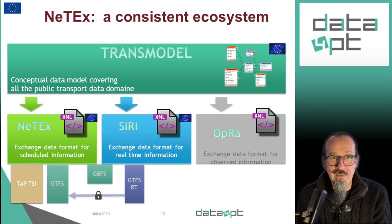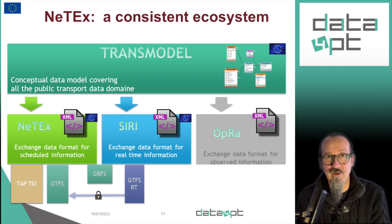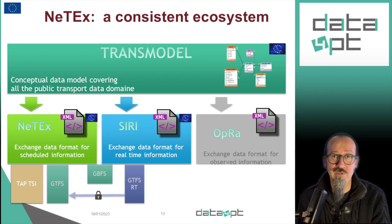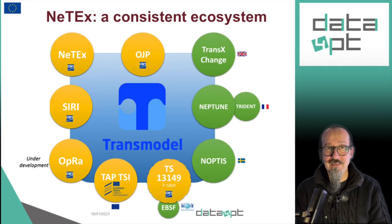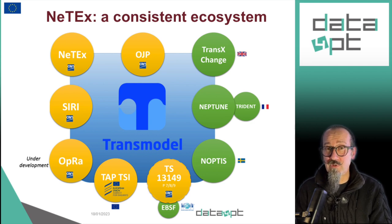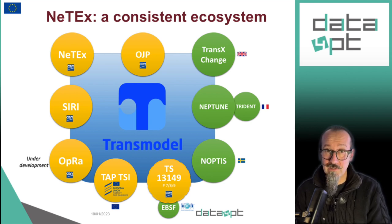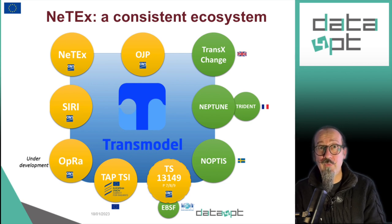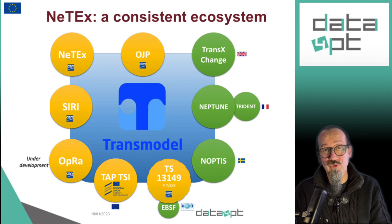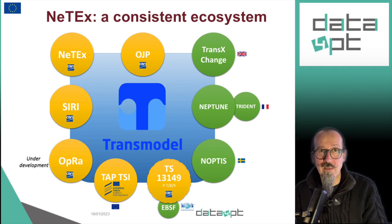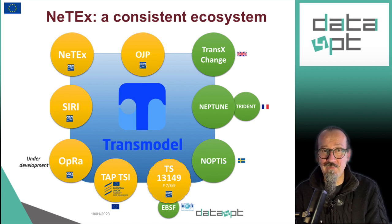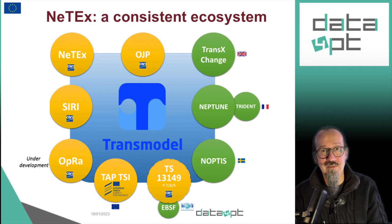TAP TSI, defined for rails, can also be seen as a functional subset of NETEX, and mapping has been done between TAP TSI and NETEX. NETEX development was started in 2009, but the Transmodel development on which it is based was started in the mid-90s. So this is a proven, strong, and long-lasting ecosystem. The European regulation recently made this ecosystem mandatory for European countries, mainly making NETEX and Siri mandatory for their national access points. Additional protocols from this ecosystem like OJP, which is an API for journey planners, or OPERA, which is for observed data that can be used as input for statistics and indicators, will also most probably in the future be part of the regulation.